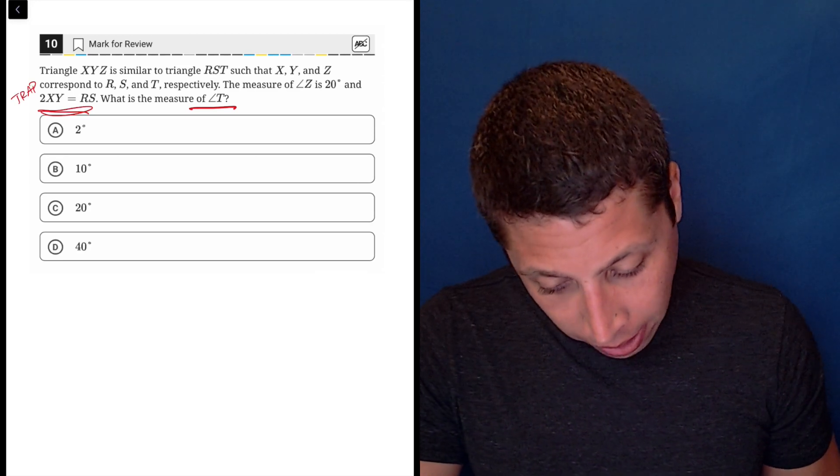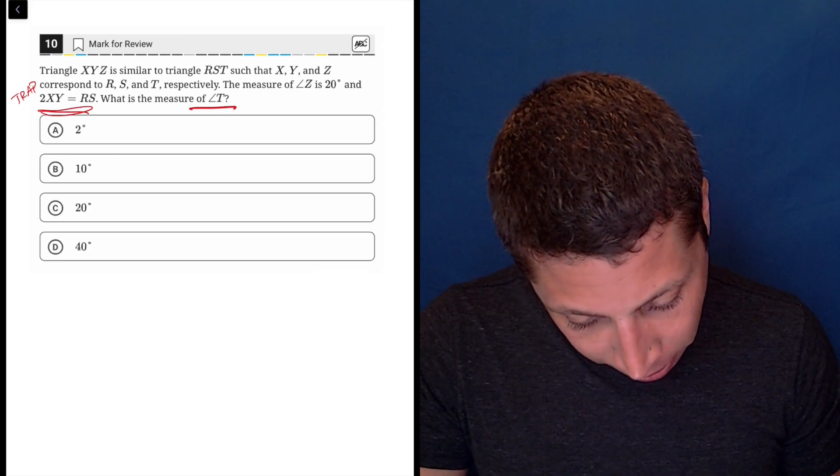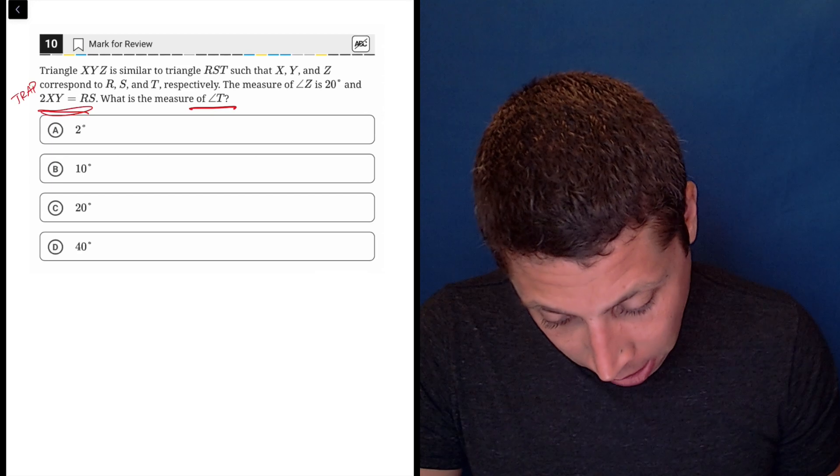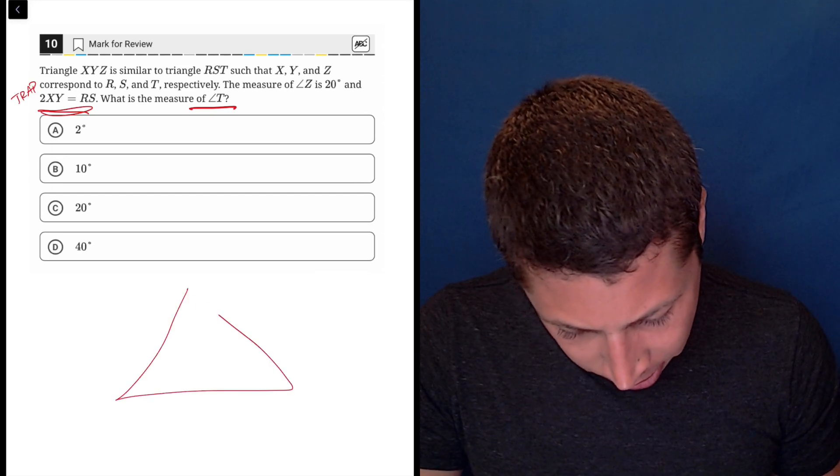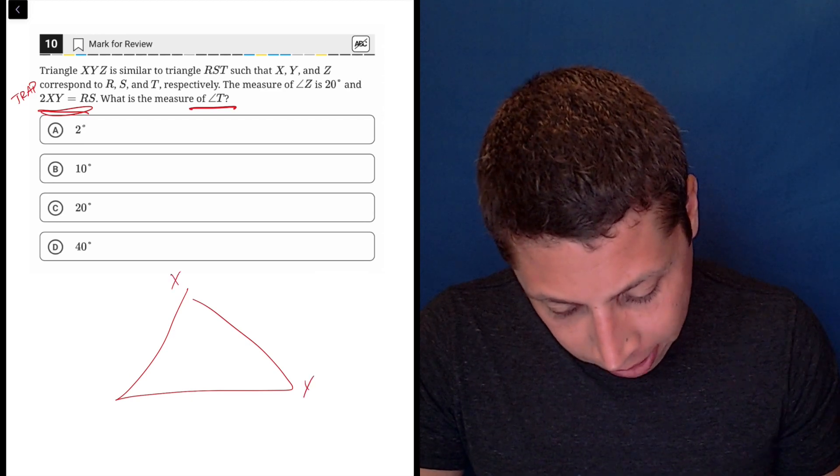So when I draw this thing, is it a right triangle? No, it doesn't say, so I'm just going to draw some triangle. Okay, so there we go. There's a triangle and it's called X, Y, Z.